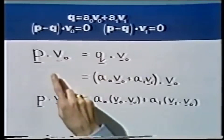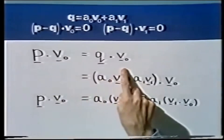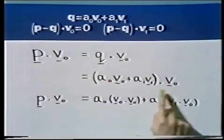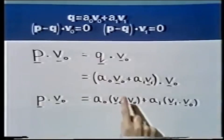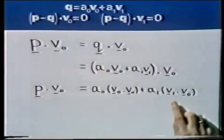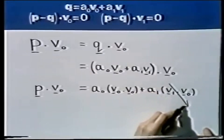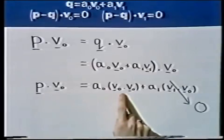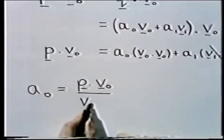So let's start with the first orthogonality equation to find A0. First of all, we rewrite this in the form P dot V0 equals Q dot V0. Then we substitute in the expression for Q into Q dot V0, and expand this dot product to give two terms. This is all equal to P dot V0. That equation holds for all bases V0 and V1, but we can often simplify calculations by taking orthogonal bases. So let's make V0 and V1 orthogonal. If V0 and V1 are orthogonal, then their dot product is just zero, and we can calculate A0 by dividing: A0 equals P dot V0 over V0 dot V0.